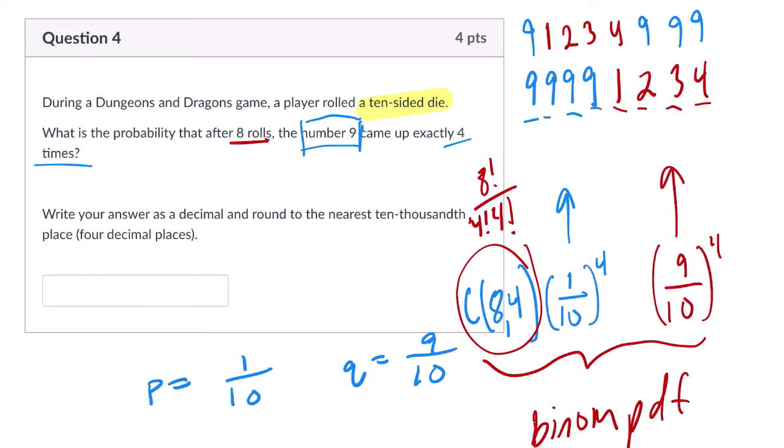Trials in this case is 8. The probability P, P is always a success, is 0.1, and it's happening 4 times. If I enter this, I get 0.0045927. To the nearest ten-thousandth, that would be 0.0046.